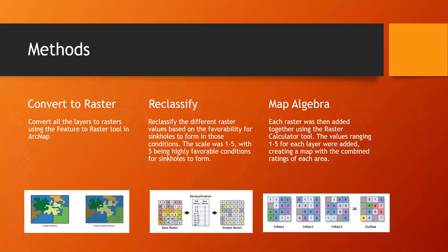My first method was to download the feature classes and then convert those to rasters so that each pixel had a value. I then reclassified them on a scale of one to five, with one being the lowest favorability of sinkhole formation and five being the highest. After reclassifying all the rasters, I used map algebra in the raster calculator — each raster was laid on top of the others and added together to create a map of values ranging from 4 to 18.